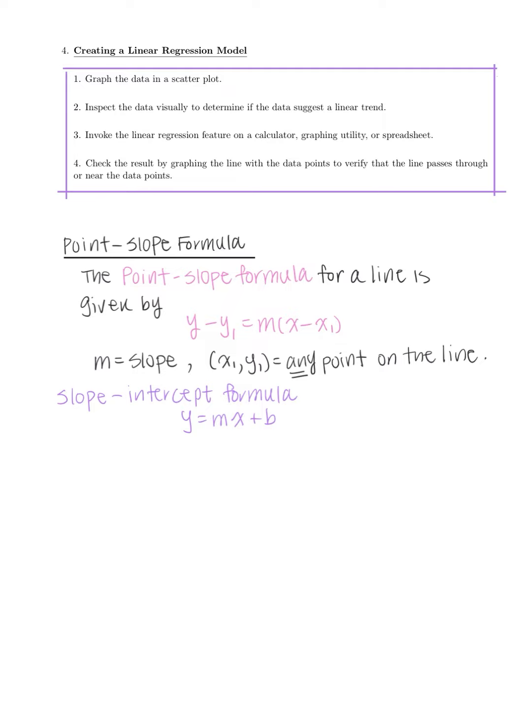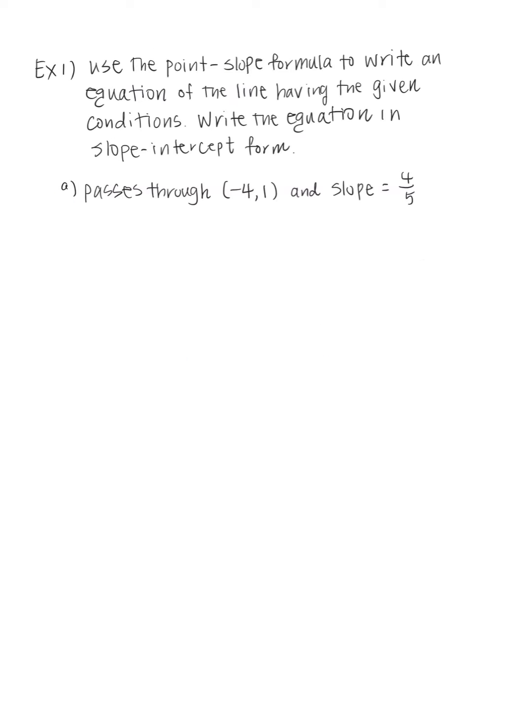In the previous section, we learned about the slope-intercept formula, which is y equals mx plus b, where m is the slope and b is the y-intercept. Please know both formulas and the corresponding names for each. Note that given a point-slope formula, you can always derive the slope-intercept form. Let's start doing some examples.